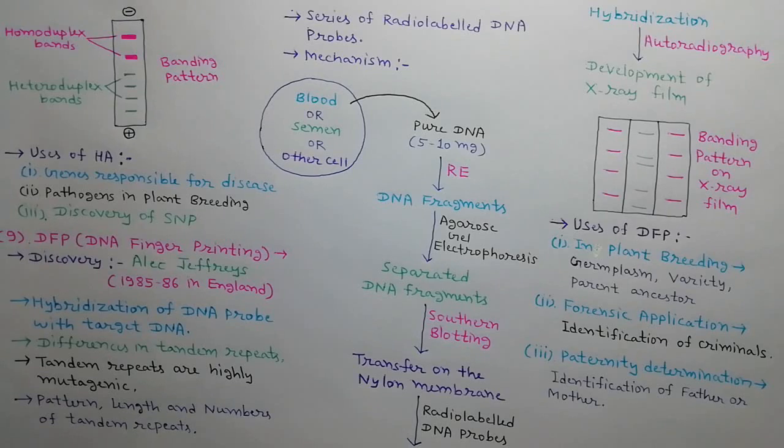DNA fingerprinting is used in many areas such as in plant breeding for the determination of germplasm, variety, parent, ancestor. Forensic application of DFP includes identification of criminals by DNA test. Paternity determination includes identification of father or mother based upon bending pattern. CCMB means Center for Cell and Molecular Biology is situated in Hyderabad. In India, DNA is tested at CCMB.